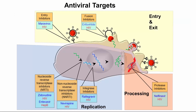Here is another depiction of the HIV replicative cycle. Notice that there are three phases of HIV which are antiviral targets: entry, replication, and processing. For now, don't worry about the names of the drugs.